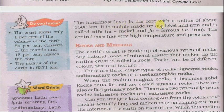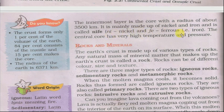The innermost layer is the core, with a radius of about 3500 km. It is mainly made up of nickel and iron, and it is called NIFE — NI for nickel and FE for ferrous (iron). Iski trijya lagbhag 3500 km hai. The central core has very high temperature and pressure.